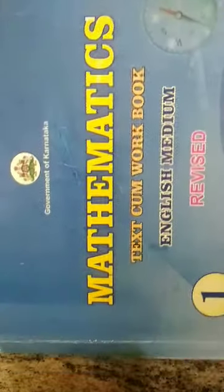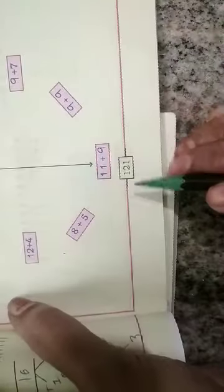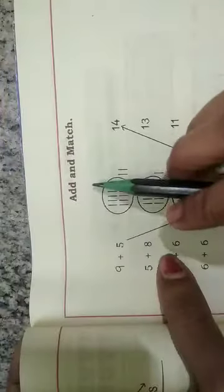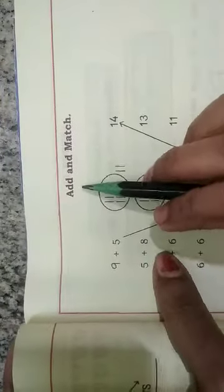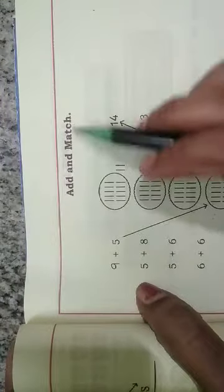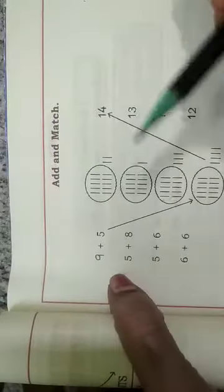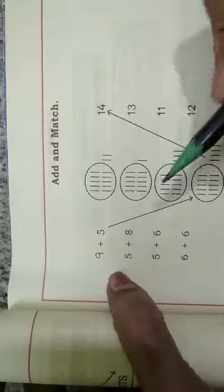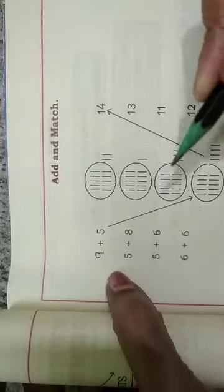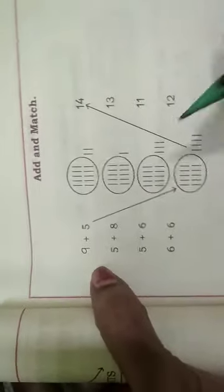Children, open your math textbook to page number 121. All of you open page number 121. Now here they have given 'add and match.' First we have to add the number, then we have to match that number.